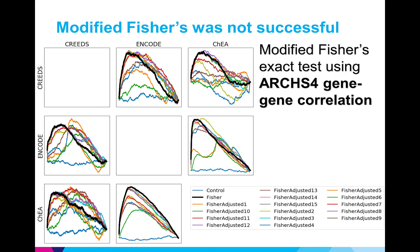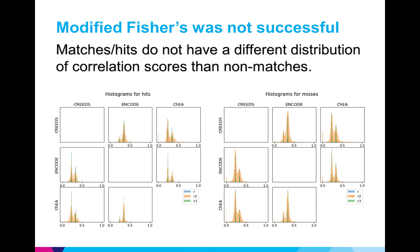Finally, the RSS4 correlation idea didn't work as well. So I kind of backtracked and I found out that the matching transcription factor gene sets pairs, they didn't even have a different distribution of correlation scores than the non-matches. The distributions, as you can see, look pretty much the same. So this is probably not an idea worth exploring further.